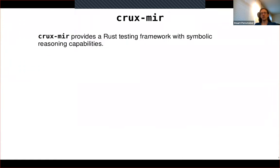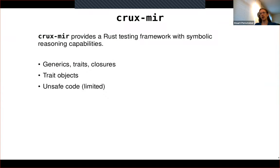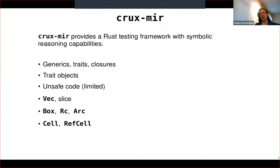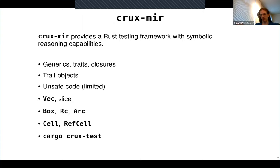In terms of language and library features, CruxMirror can handle most standard safe language features: generics, traits, closures, and trait objects all work fine. On the library side, it handles many common essential types in Rust such as Vec, Slice, Box, Cell, and so on. It has the cargo crux-test command, designed to provide a familiar user interface. Everyone's used to writing tests and running them with cargo test, and the idea is that you should be able to write your symbolic tests roughly the same way and run them with a similar command.